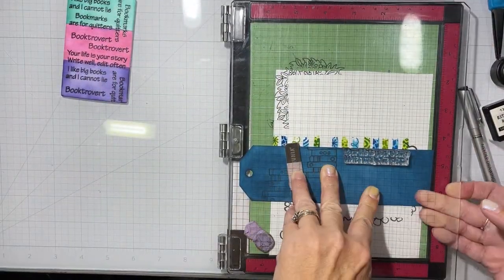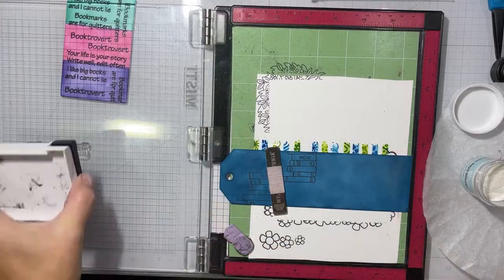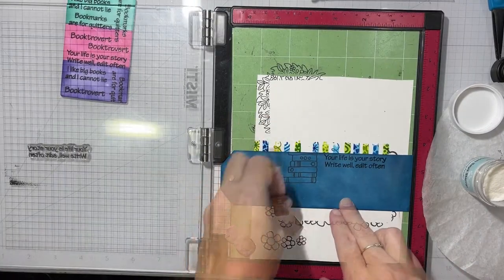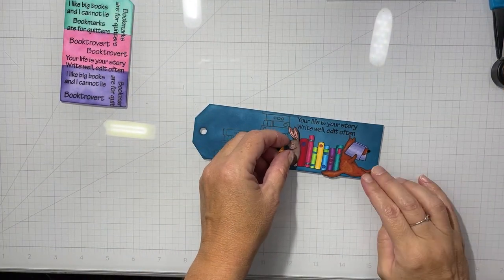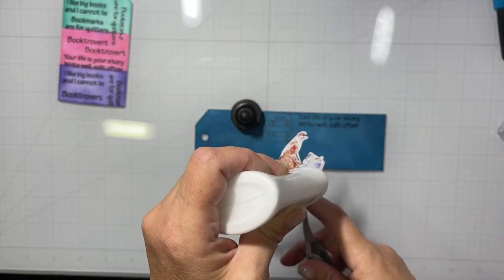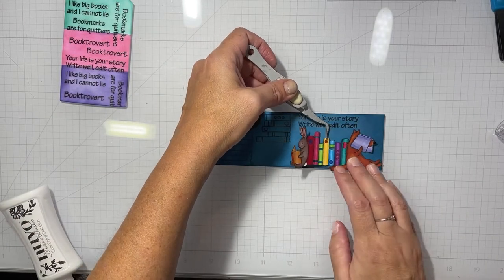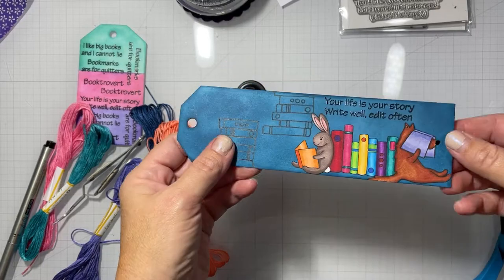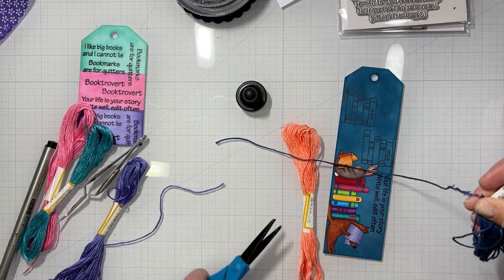I did one coming from the left side of the bookmark, and then right underneath it coming from the right side of the bookmark. And then down towards the bottom, we're going to put our sentiment and then our colored image, which I believe I showed you at the beginning. My image that I had already colored in with my Copics. It's your story. Write well, edit often. And now we're going to adhere our image here with some Nouveau Deluxe adhesive. I do unfortunately have to trim a little bit of the tail off the edge, but that's okay. I decided to trim it off.